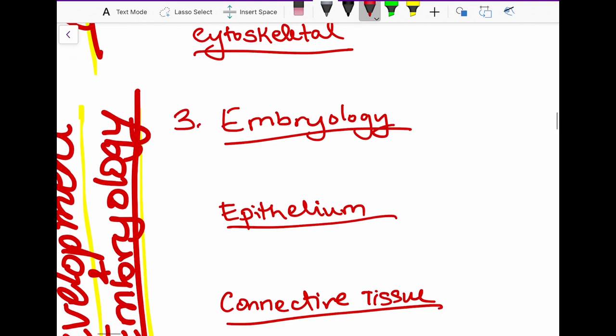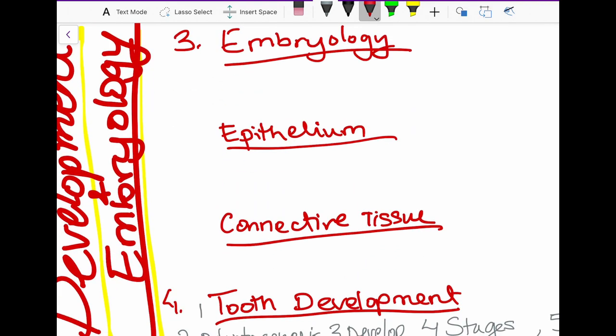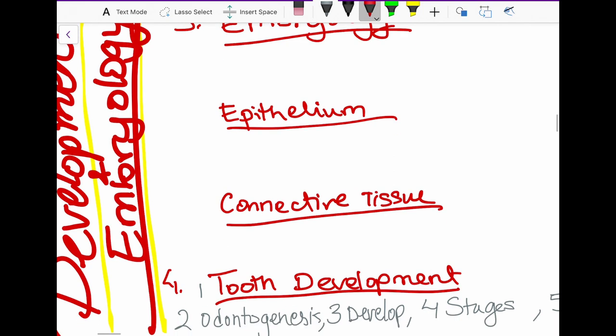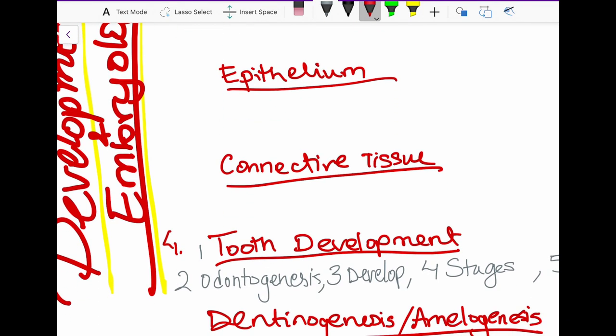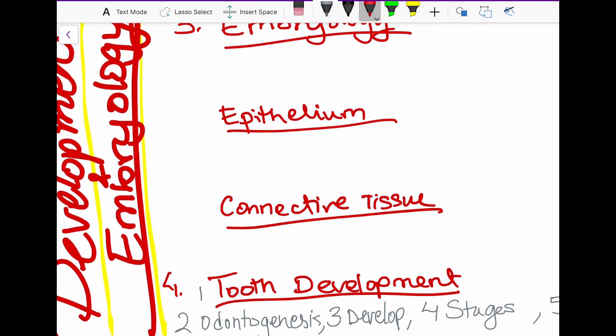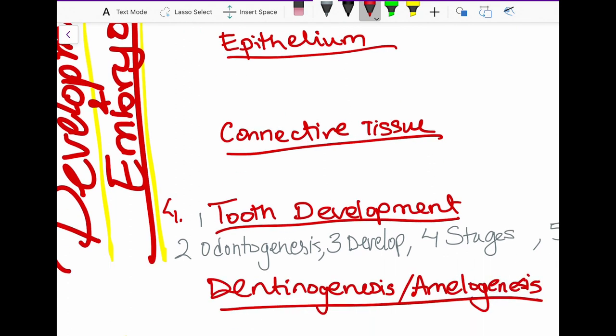Next, we go into the development and embryology. So we will start with basic embryology. We'll talk about epithelial connective tissue, and how everything from cells, organs, epithelial connective tissue, embryology, how we can put all together and start our tooth development. So we're going to build this building called the tooth.